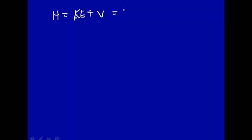And for particle in a box, the kinetic energy was just the momentum squared over two times the mass of the particle plus the potential energy. We set that equal to zero. It was a constant which we set equal to zero.